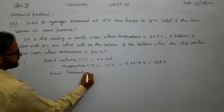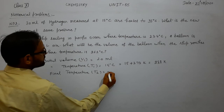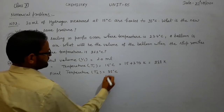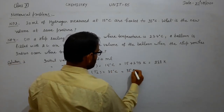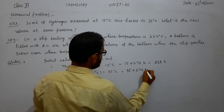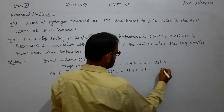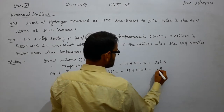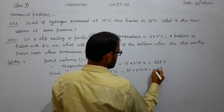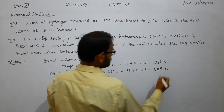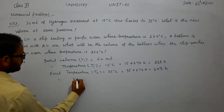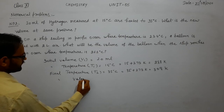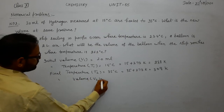The final temperature T2 is 35 degree Celsius, which converts to 35 + 273 = 308 Kelvin. We need to calculate the new volume V2.